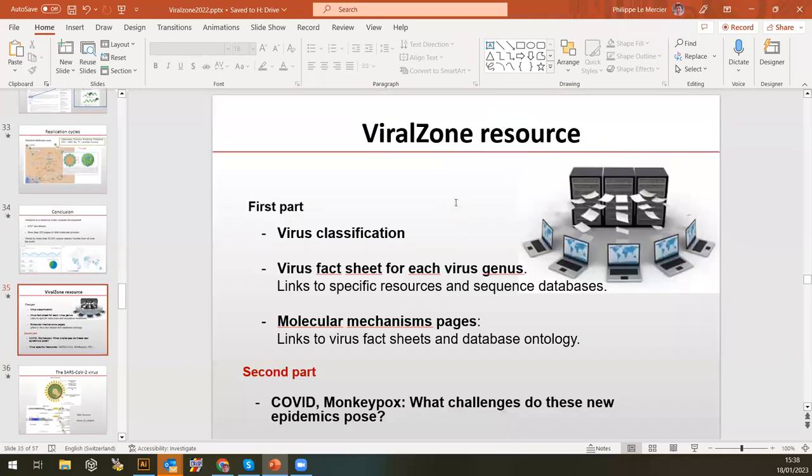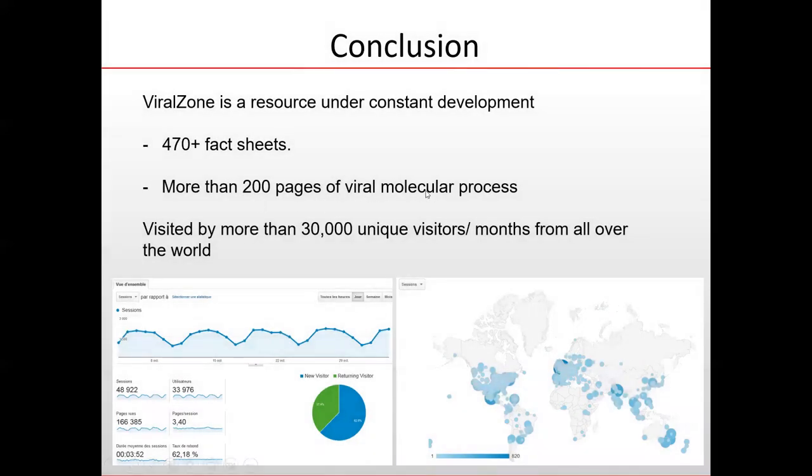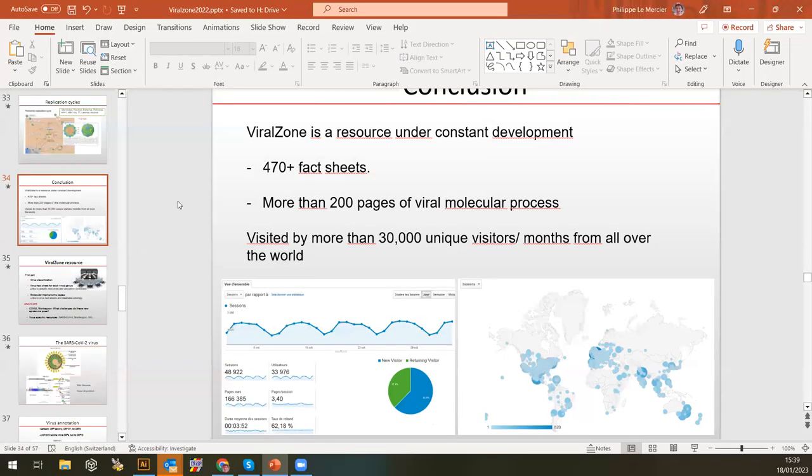We have all these fact sheets. We have about 200 pages of specific viral molecular processes—knowledge about molecular biology of viruses. And the website is visited by more than 30,000 unique visitors every month all over the world. So it's kind of a success. We made that because when I was a molecular biologist at the lab, I wanted to access a lot of information that was difficult to have. I kind of wanted to make this site to deal with that need, and it seems a lot of people in the world had that need. ViralZone is pretty much used for that.